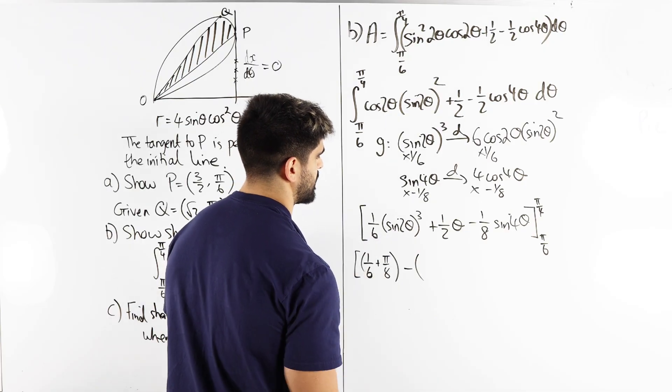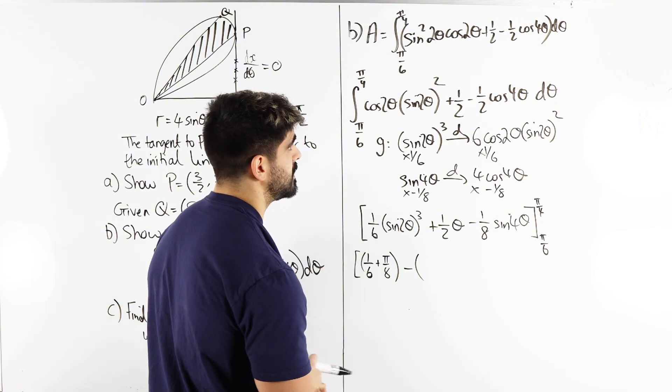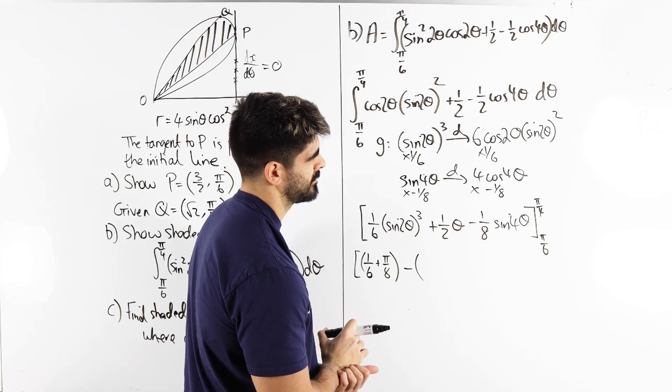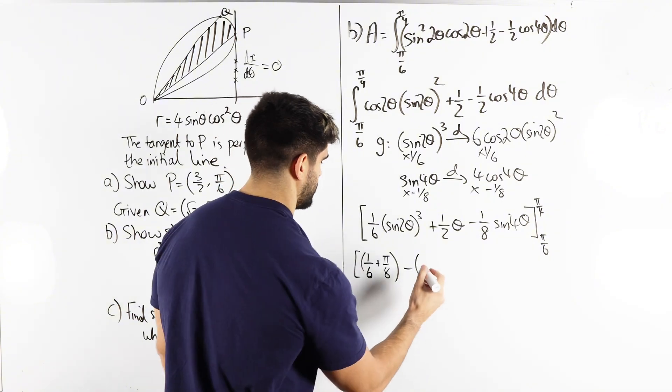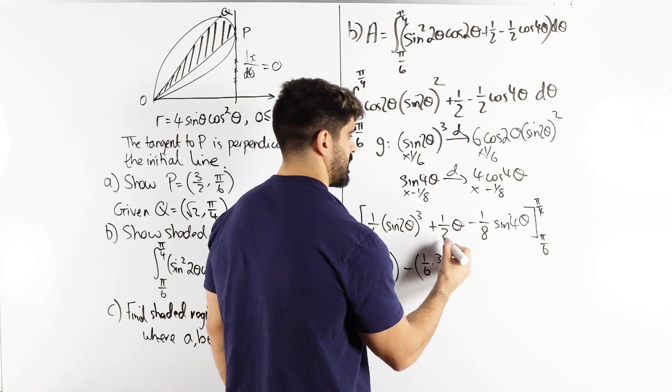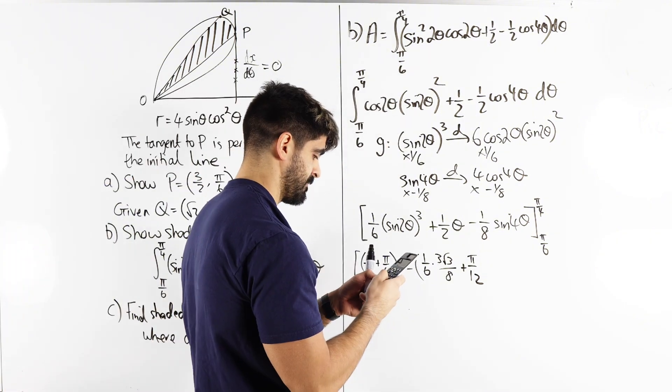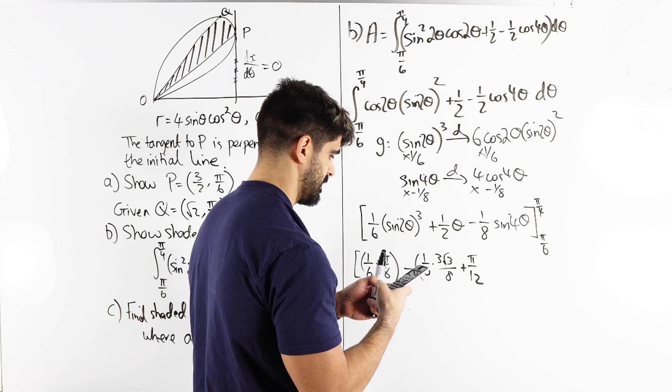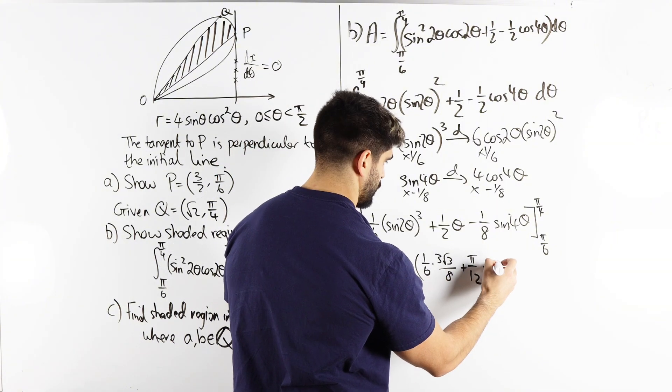Sine of pi is zero, so I mean pi over six, sine of two lots of pi over six, that's sine of pi over three, sine of pi over three is root three over two, then when we cube that, root three over two cubed, three root three over eight, three root three over eight times one sixth, plus a half of this is pi over twelve, sine of four pi over six in radians, root three over two times one eighth, so minus root three over sixteen.